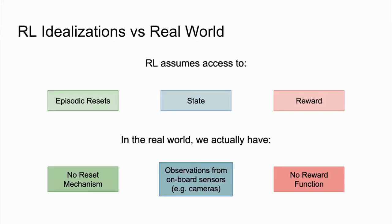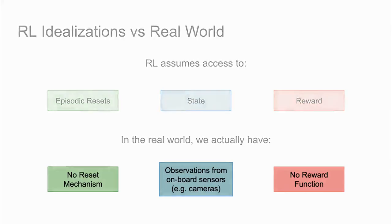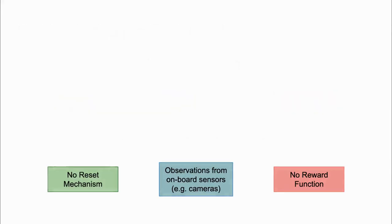In particular, a standard RL formulation assumes access to a reset mechanism, Markovian state information, and a reward function. Meeting these assumptions in the real world often requires significant instrumentation, making RL difficult to scale to new environments.